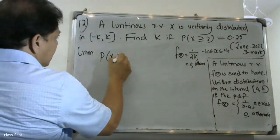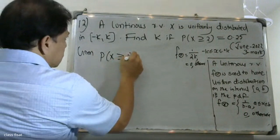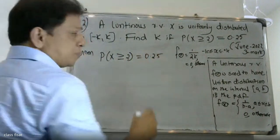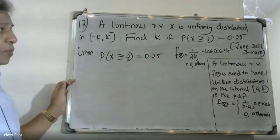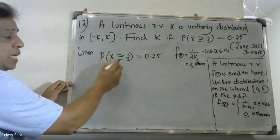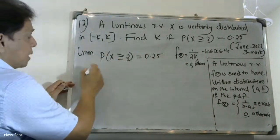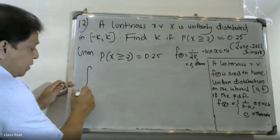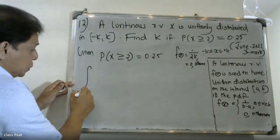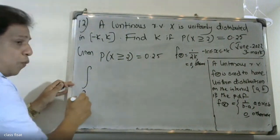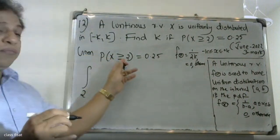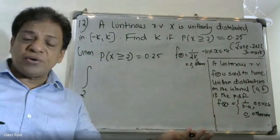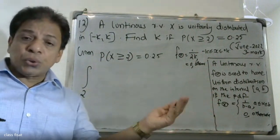The probability of x greater than or equal to 2 is equal to 0.25. For a continuous random variable, this means we integrate from 2 to k: the integral from 2 to k of f(x) dx equals 0.25.